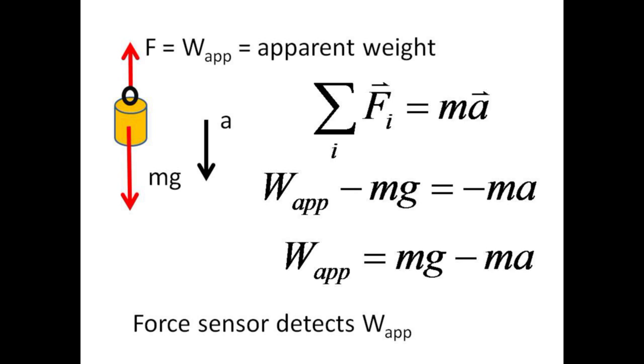For the heaviest weight you used, compare the apparent weight measured by the force sensor with the difference between mg and ma. Ask yourself whether the apparent weight of this downward accelerating mass is greater than or less than its actual weight.